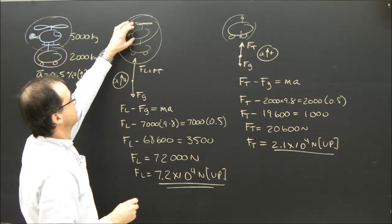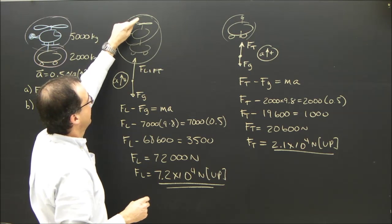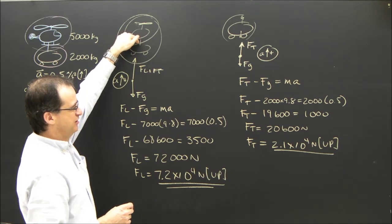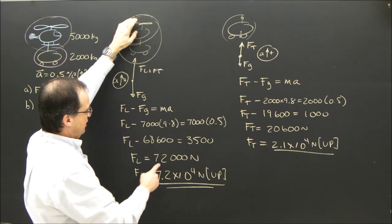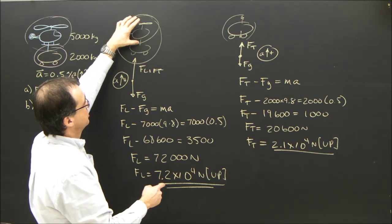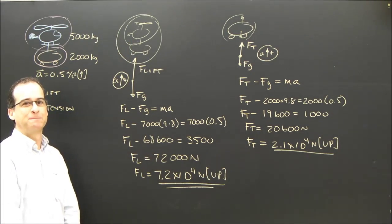If I had done this just with the helicopter, I would have had lift up and Ft down, and it would have been, the lift was 72,000 minus the tension down equals MA, but the mass would be the 5,000. It would still work out, so you can try that, okay?